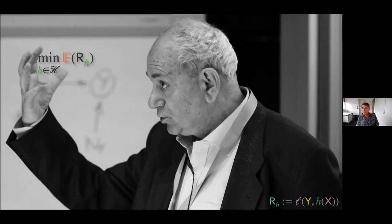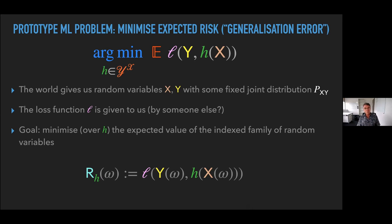This is Vladimir Vapnik. I took this photograph in Tübingen about six or seven years ago. What he's holding in his hand is the empirical risk minimization principle. This is the foundation of most of machine learning — certainly the theory of machine learning looks at it that way. And spelling it out in a little more detail, what you do in an abstracted machine learning problem is this formula.